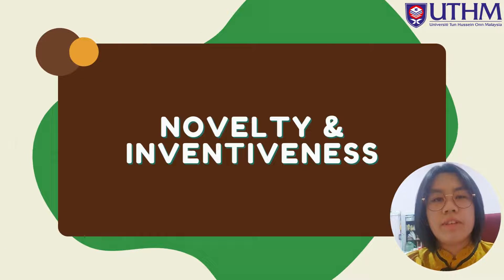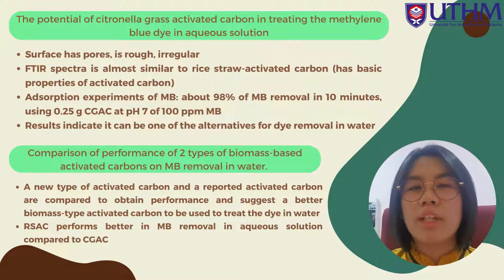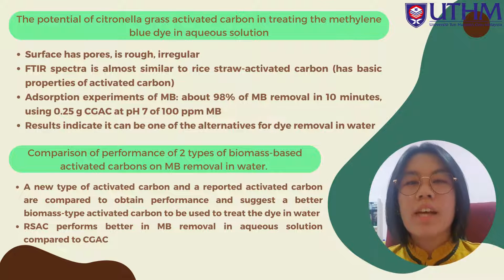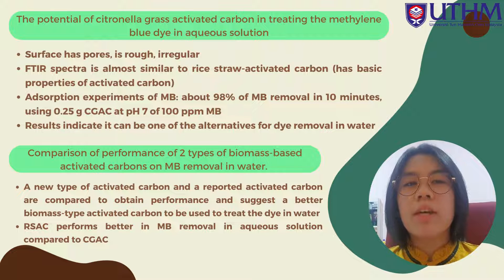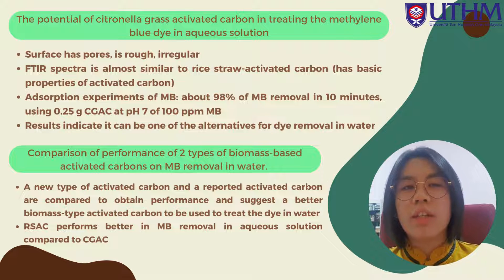I will now present the novelty and inventiveness of the project. There is potential of Citronella grass activated carbon in treating Methylene Blue dye in aqueous solution. To the best of our knowledge, there is still no reported study on the production of activated carbon from Citronella grass and its details in treating dye in water. From the SEM analysis, the surface of Citronella grass activated carbon is rough, irregular, and has pores. The FTIR spectra of Citronella grass activated carbon were observed to be mostly similar to rice straw activated carbon, indicating it has the basic properties of an activated carbon. In the adsorption experiments of Methylene Blue, about 98% removal was achieved. Although the percentage removal using Citronella grass activated carbon is not as high as rice straw activated carbon, the Methylene Blue removal was still considered high and efficient. The result has proven that Citronella grass activated carbon can also be one of the alternatives for dye removal in water.